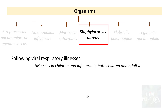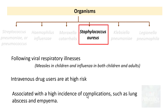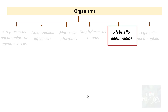Staphylococcus aureus usually follows viral respiratory illnesses such as measles in children and influenza in both children and adults. Intravenous drug abusers are at very high risk. It is associated with a very high incidence of complications such as lung abscess and empyema, which we will discuss later.